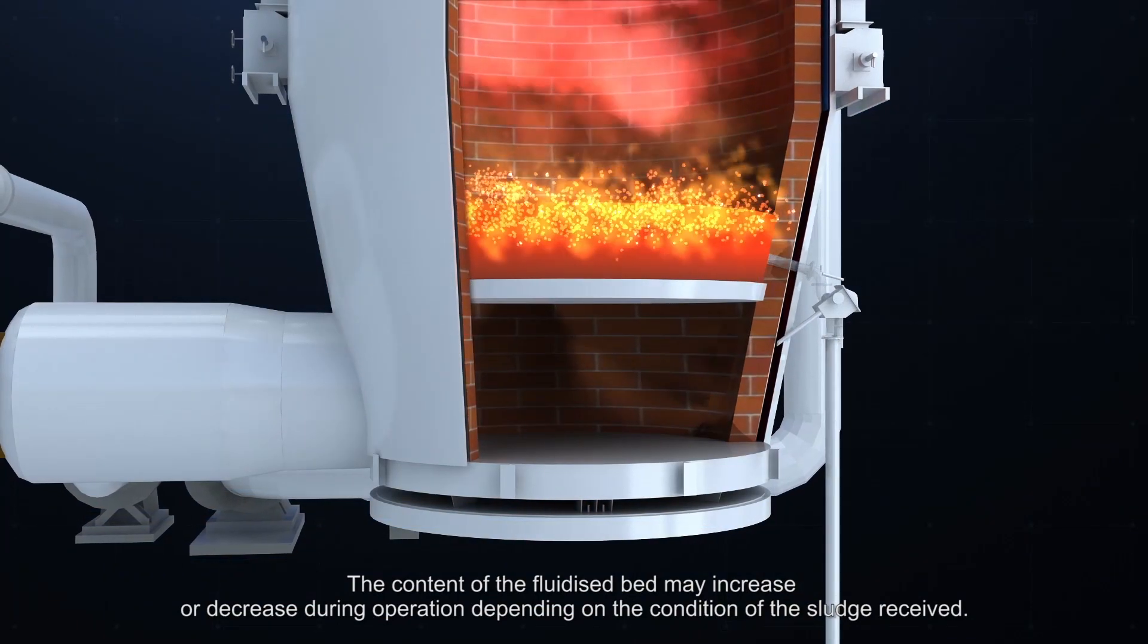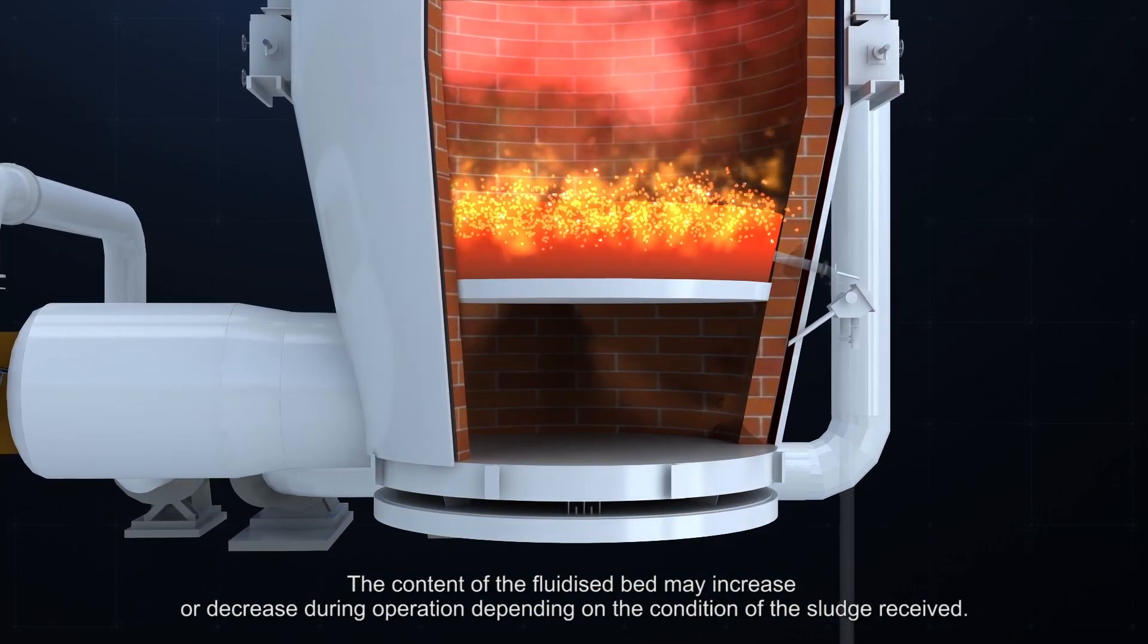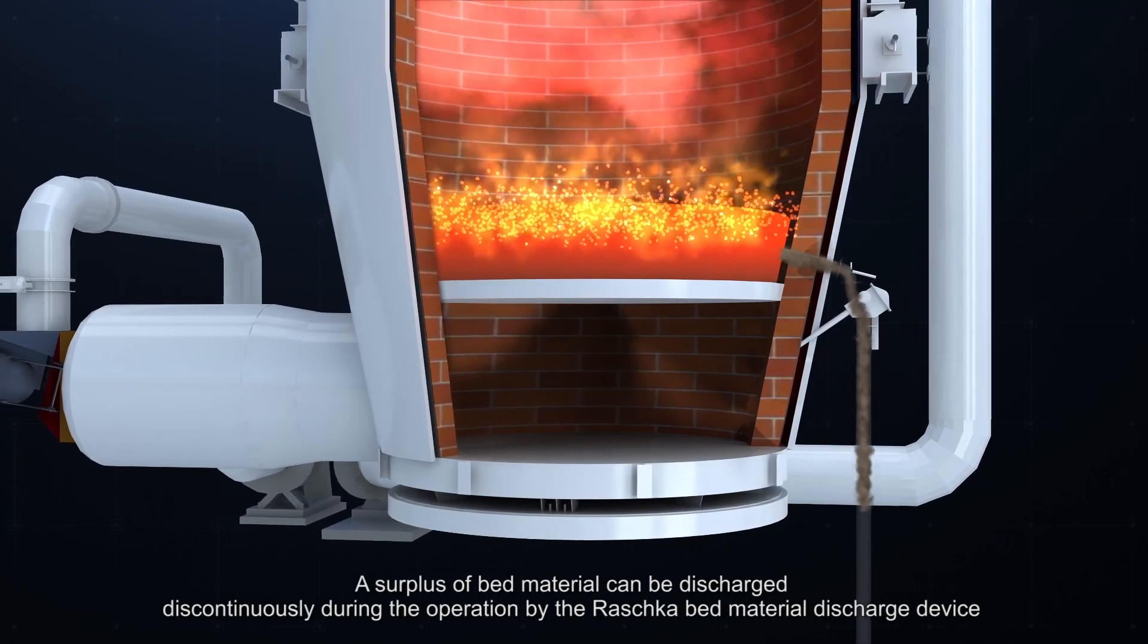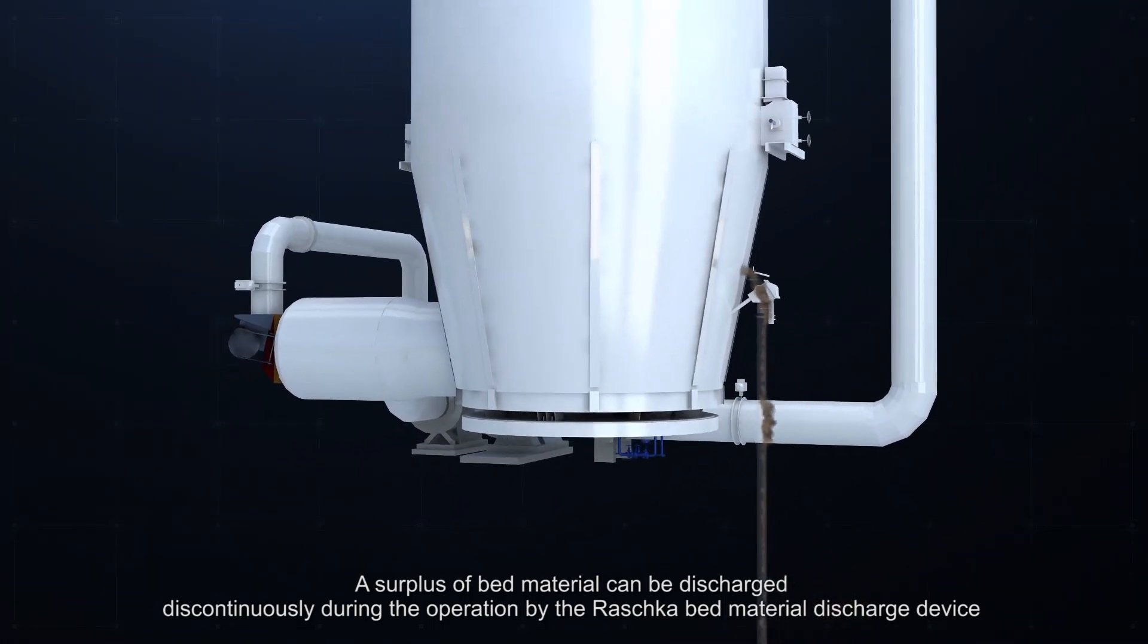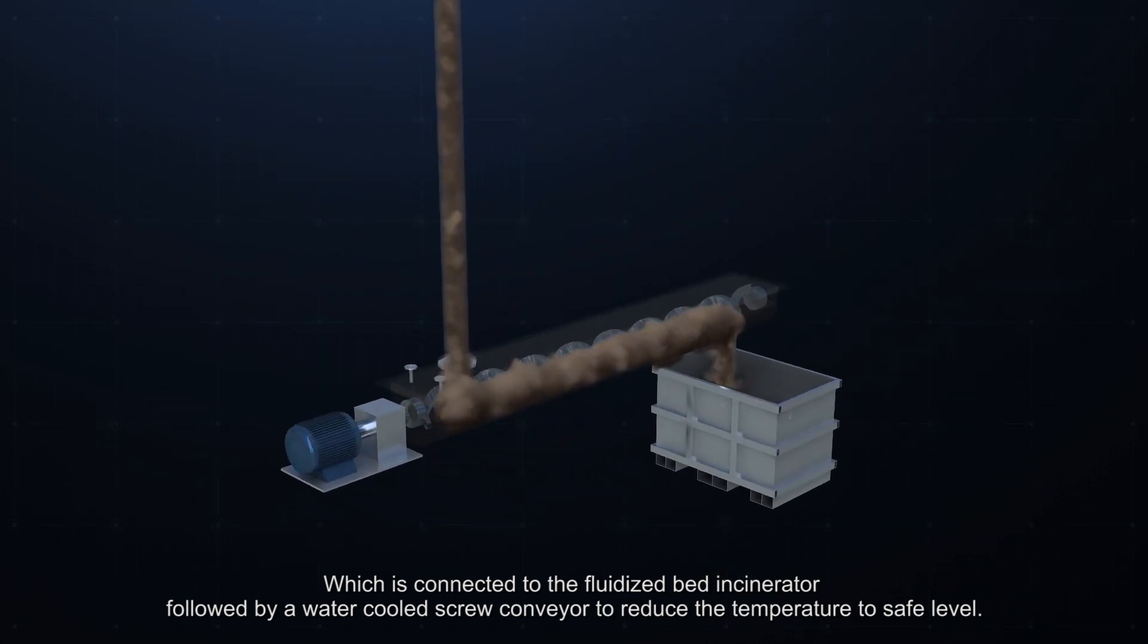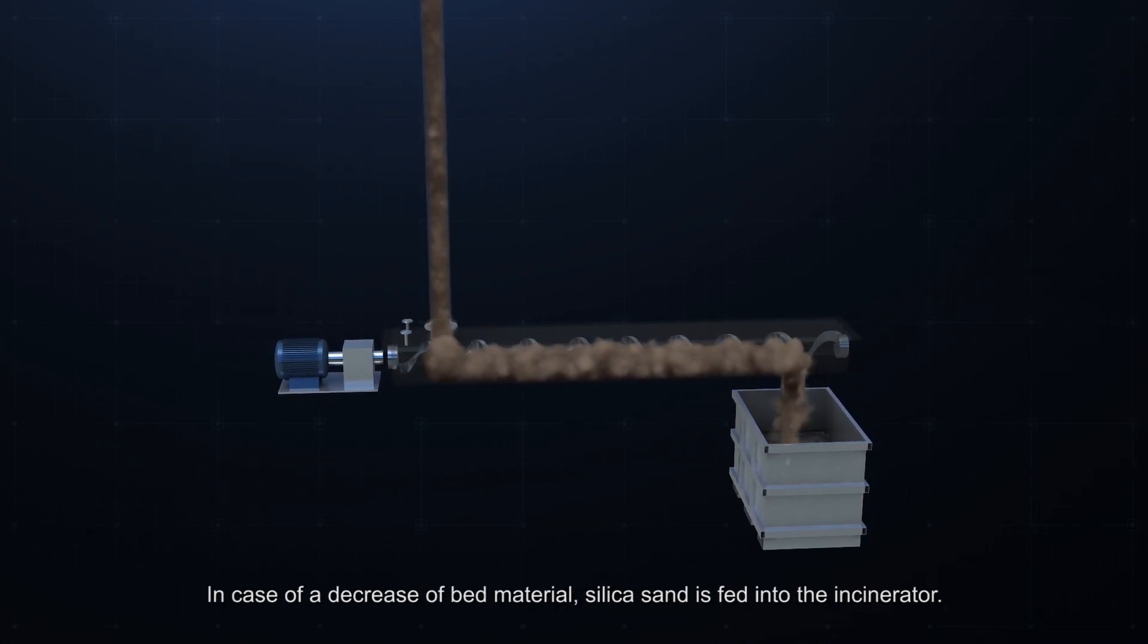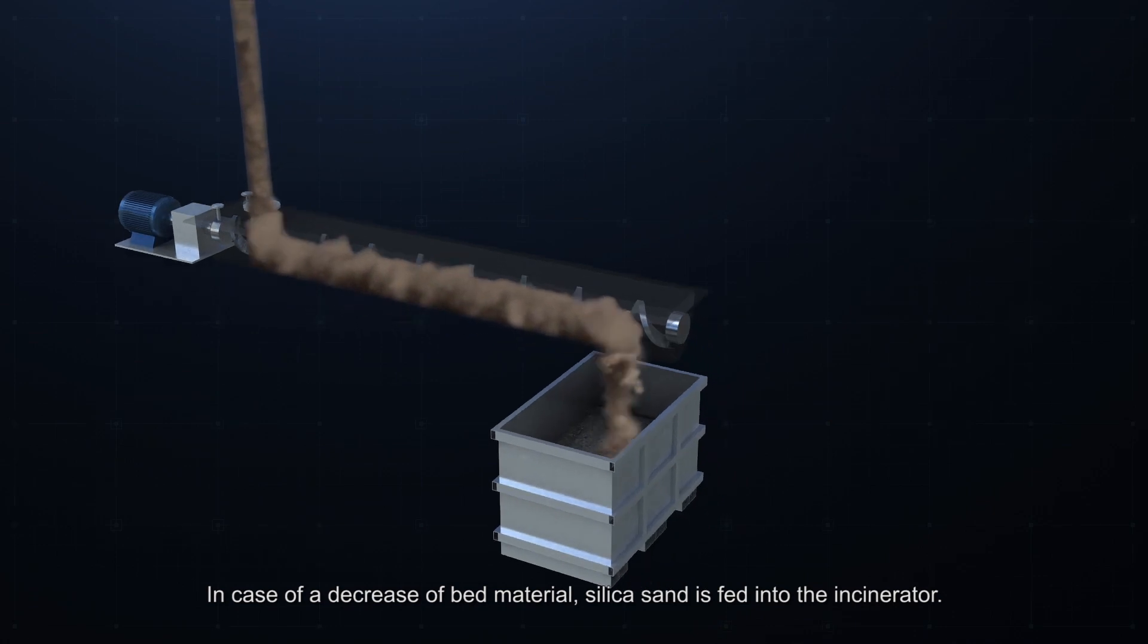The content of the fluidized bed may increase or decrease during operation, depending on the condition of the sludge received. A surplus of bed material can be discharged discontinuously during the operation by the Raschke bed material discharge device, which is connected to the fluidized bed incinerator, followed by a water-cooled screw conveyor to reduce the temperature to safe levels. In case of a decrease of bed material, silica sand is fed into the incinerator.